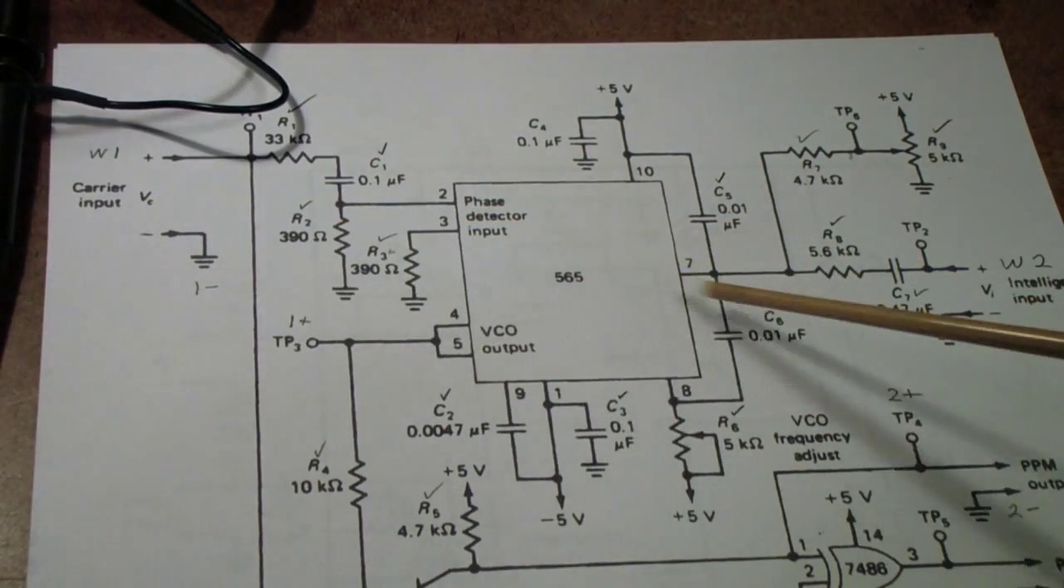Here is the circuit we're using. It uses a 565 phase-locked loop. The carrier signal is input on this side and the intelligence signal on this side. This is connected AWG2 of the analog discovery and the carrier signal is connected AWG1.